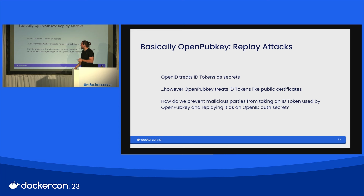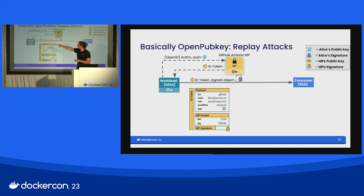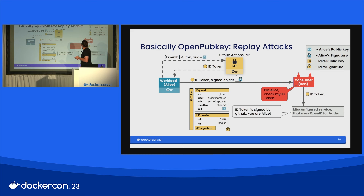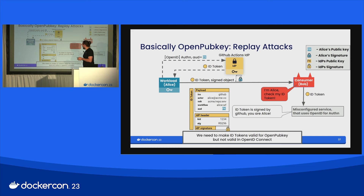Let's look at the attack in more specificity. Alice is sending her ID token and signed object to Bob, same as before. But now we have EvilBob. EvilBob takes the ID token and replays it to a misconfigured OpenID Connect service and says, 'I'm Alice.' And the service says it's signed by GitHub, so you are Alice. So our plan of attack is that we want to preserve the security and cryptographic properties of ID tokens but make them valid for OpenPubKey but not valid when used for OpenID Connect authentication.